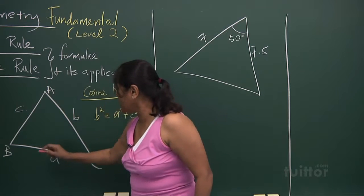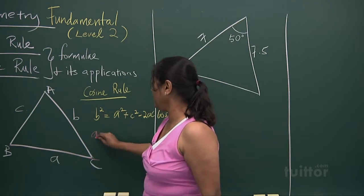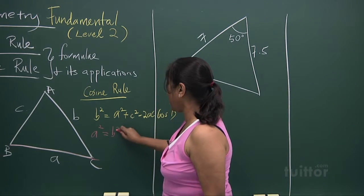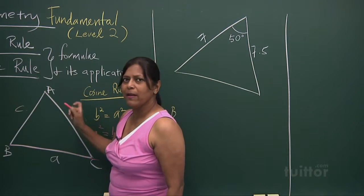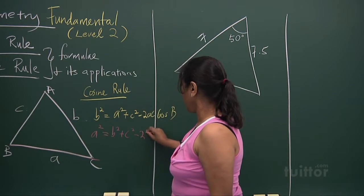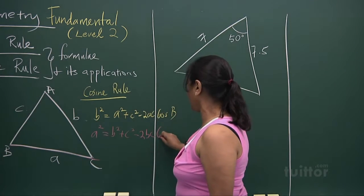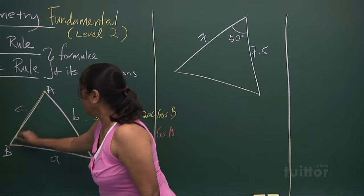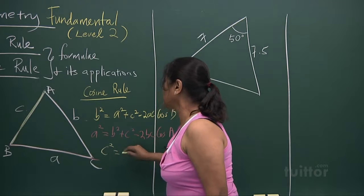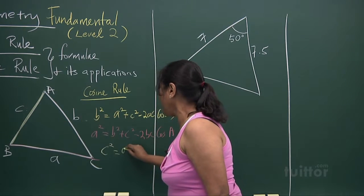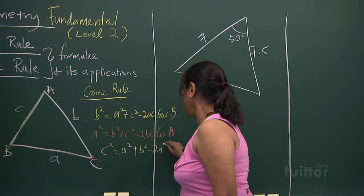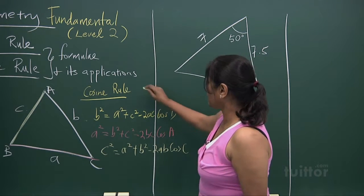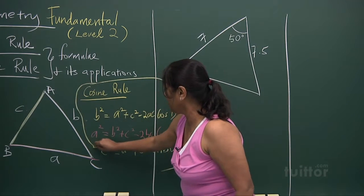If you want to find a squared, it equals b squared plus c squared minus two bc cos A — the angle between b and c. Similarly, c squared equals a squared plus b squared minus two ab cos C.